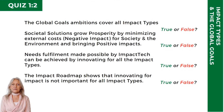Question: the global goals' ambitions cover all impact types. True — we saw it in Global Goal 10, inequalities, and Goal 12, responsible consumption and production. Question: societal solutions grow prosperity by minimizing negative impact and creating net positive impact. True — when governments, businesses, and investors assess net and negative impacts. Question: basic needs fulfillment plus impact tech can be achieved by innovating for all the impact types. True — with just 10% of beneficial corporations, we can innovate for all impact types to accelerate the impact transition. Question: the impact roadmap shows innovating is not important for all impact types. False — innovating for impact types is interlinked, like the global goals.